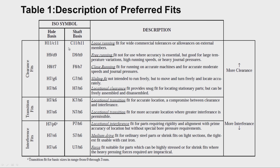This table covers basic sizes from 30mm to 500mm. Similarly, ANSI standard provides readymade tables for hole basis metric transition and interference fits, shaft basis metric clearance fits, and shaft basis metric transition and interference fits. One can obtain these readymade tables from the standard and use them directly.